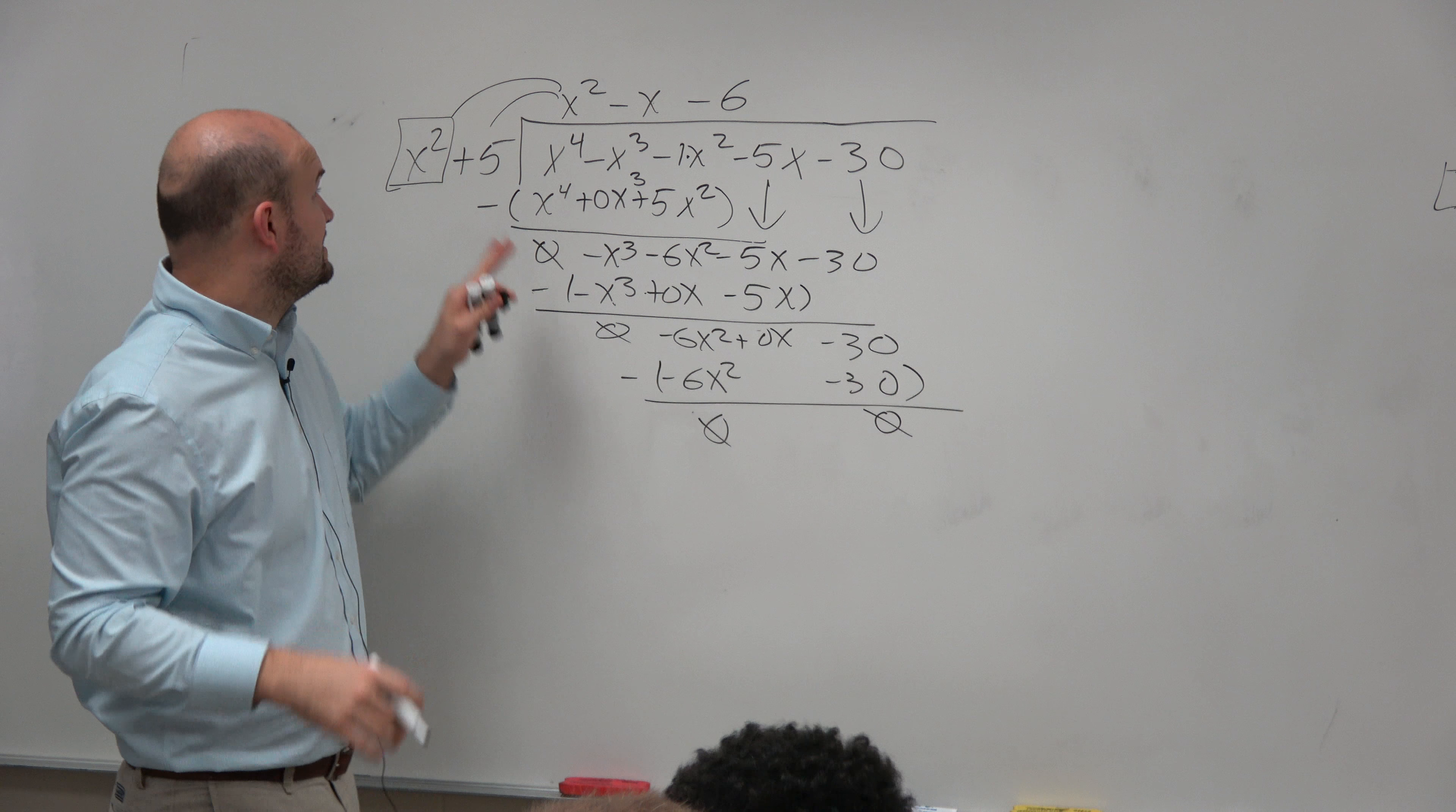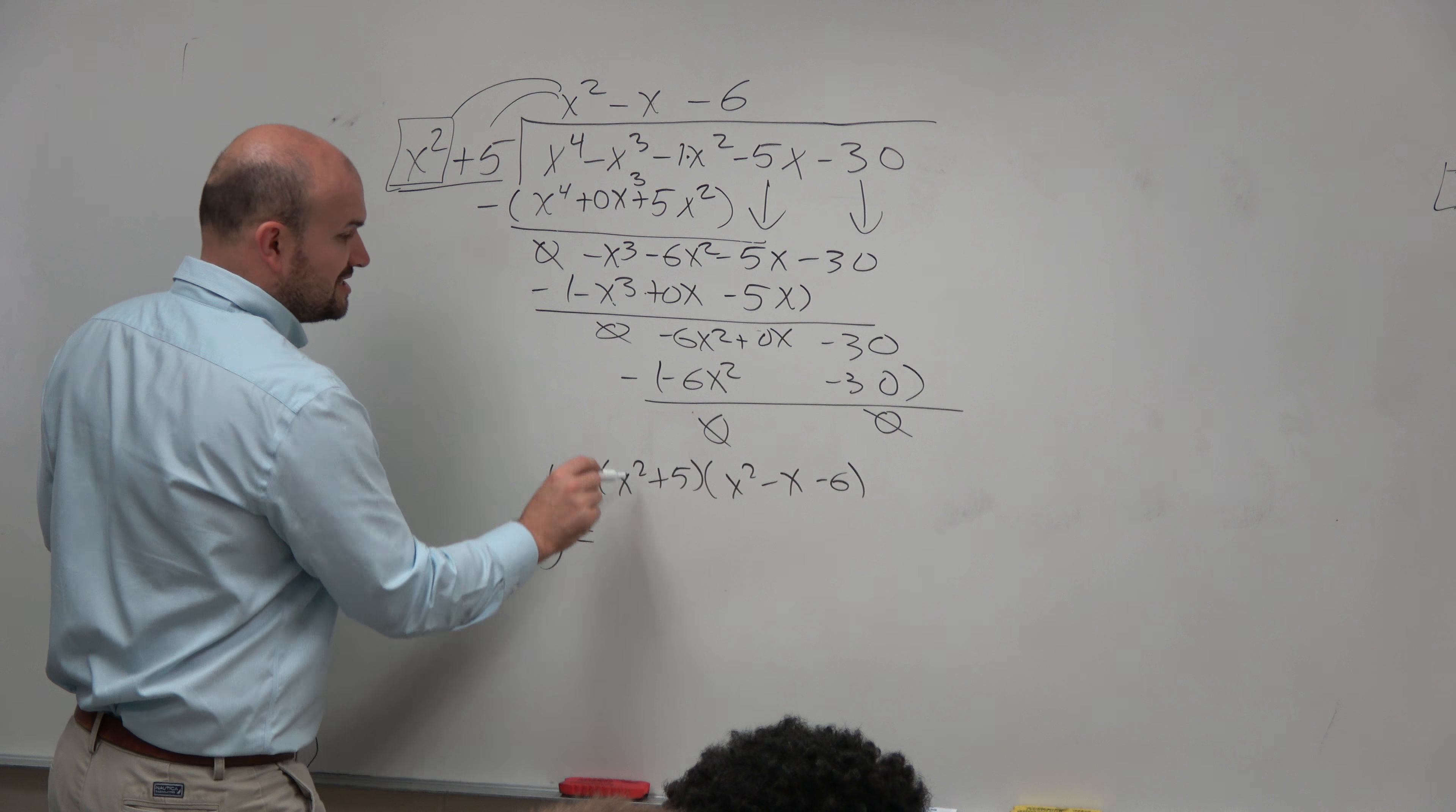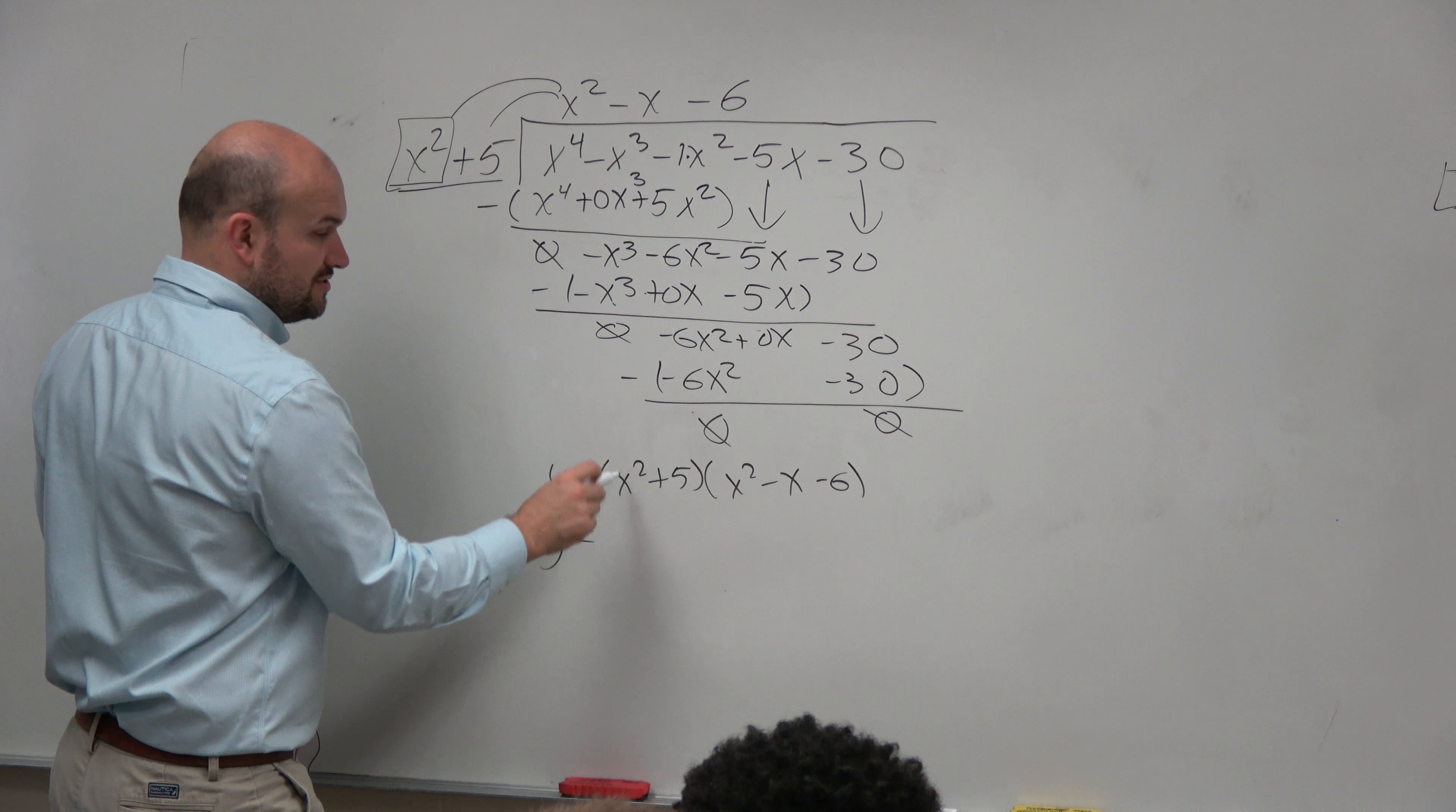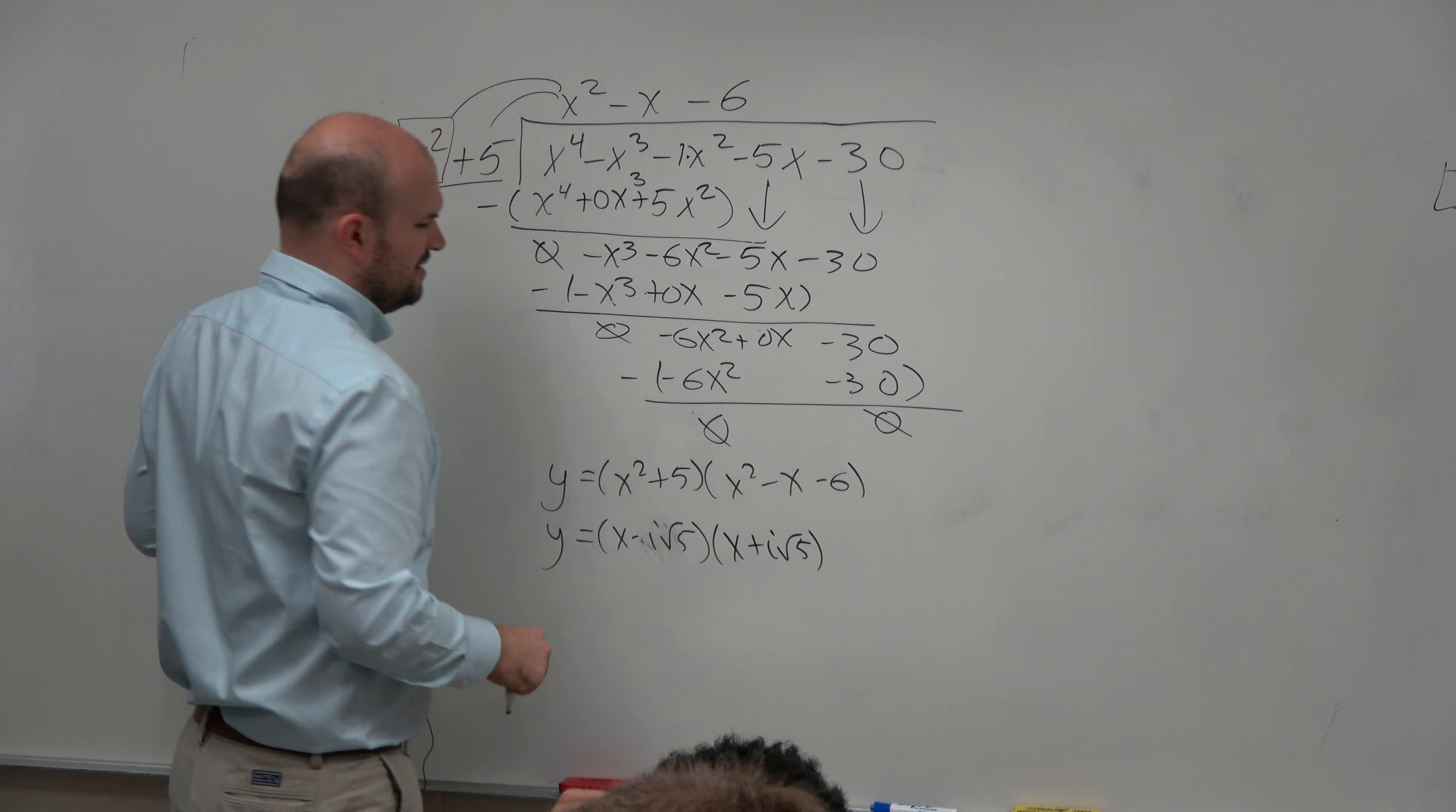But again, guys, if I want to find all the zeros, I need to get this further down, right? So therefore, I just need to factor this. Guys, hopefully, what we learned last class period is to factor this down, which would be x minus i square root of 5, times x plus i square root of 5. I know some of you are like, what did you do? Just remember, guys, x squared plus 5 equals 0, x squared equals negative 5, square root, square root, x equals plus or minus i square root of 5. I just took the zeros and wrote them as factors. That's all I did.